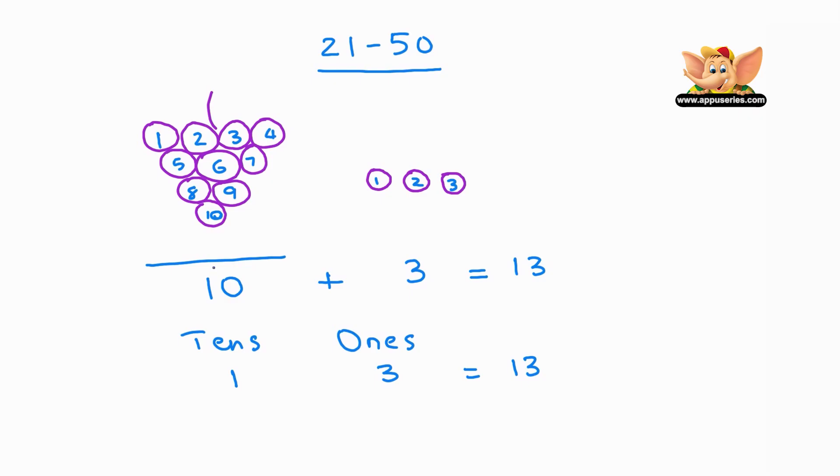Let us denote a ten with this circle, as we had done in our earlier videos. Remember when we learned numbers till 20? Let us write it here. So, this circle plus another circle is 1 ten plus another 10 equals 20. That is, the number 20 is 2 tens.